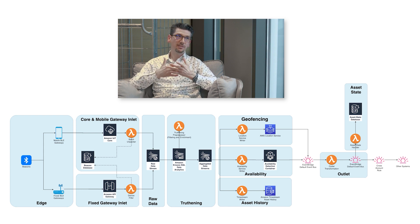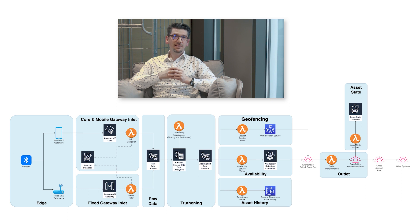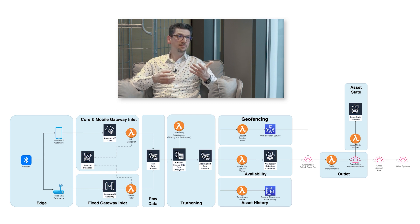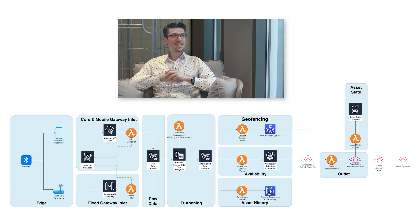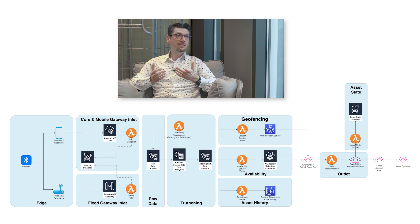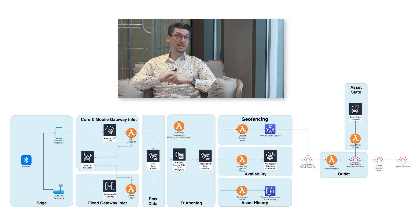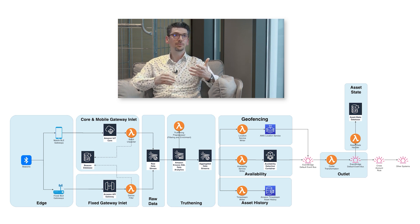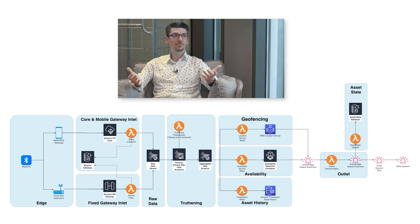We also have other types of internal event producers. One of them is called the availability service. The beacons are not directly connected to our backend — there are gateways in between — but if no gateways are nearby, the beacons are sending advertisements that nobody picks up. So we want to be notified when this happens. If we don't hear from a beacon for a long time, we create an event saying this beacon or asset is not available anymore. This happens a lot at PostNL because the role cages we track are sometimes left at a customer location, and if customers don't have PostNL's infrastructure, we can no longer detect those assets.